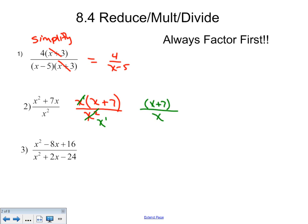You can never take parts of a quantity. So what you cannot do is take the x and the x and tell me that the answer is 7. Absolutely not. x plus 7 is a quantity. You either have to take the whole quantity or nothing at all. So this answer is x plus 7 over x.